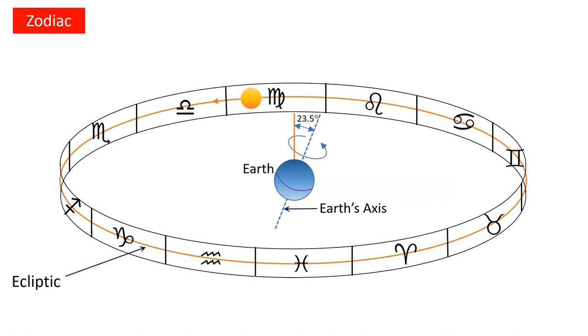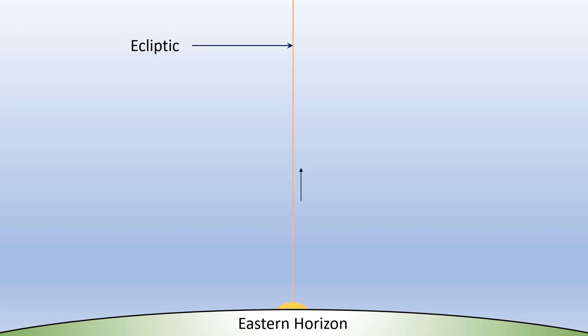Now let's assume you are standing on the Earth at some place facing the eastern horizon and looking at the sky. If you are standing there at the time of sunrise, then as the Earth rotates around its axis, you will find the Sun rising in front of you — that is, from the east — then moving over your head along the ecliptic, which is the Sun's apparent path, and setting in the west.